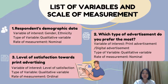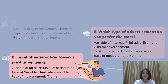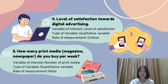The first variable is respondent demographic data, where we collect respondent gender and ethnicity. The scale of measurement is nominal, which is under qualitative variable. The second variable is the type of advertisement that respondents prefer the most — print advertisement or digital advertisement. The scale of measurement is nominal and is also under qualitative variable. The third variable is the level of satisfaction of respondents toward print advertisement. The scale of measurement is ordinal and it is under qualitative variable.